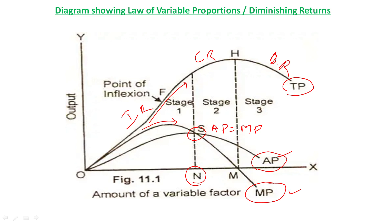On further increase in input, the total product curve continues increasing, indicating the second stage. In this second stage, total product becomes constant at a point, and AP starts declining. The average product curve starts declining, and MP falls faster than AP — MP goes below the AP line. At point M, where MP is touching the X-axis, it indicates the end of constant returns. In stage 3, MP becomes negative and both TP and AP start declining.